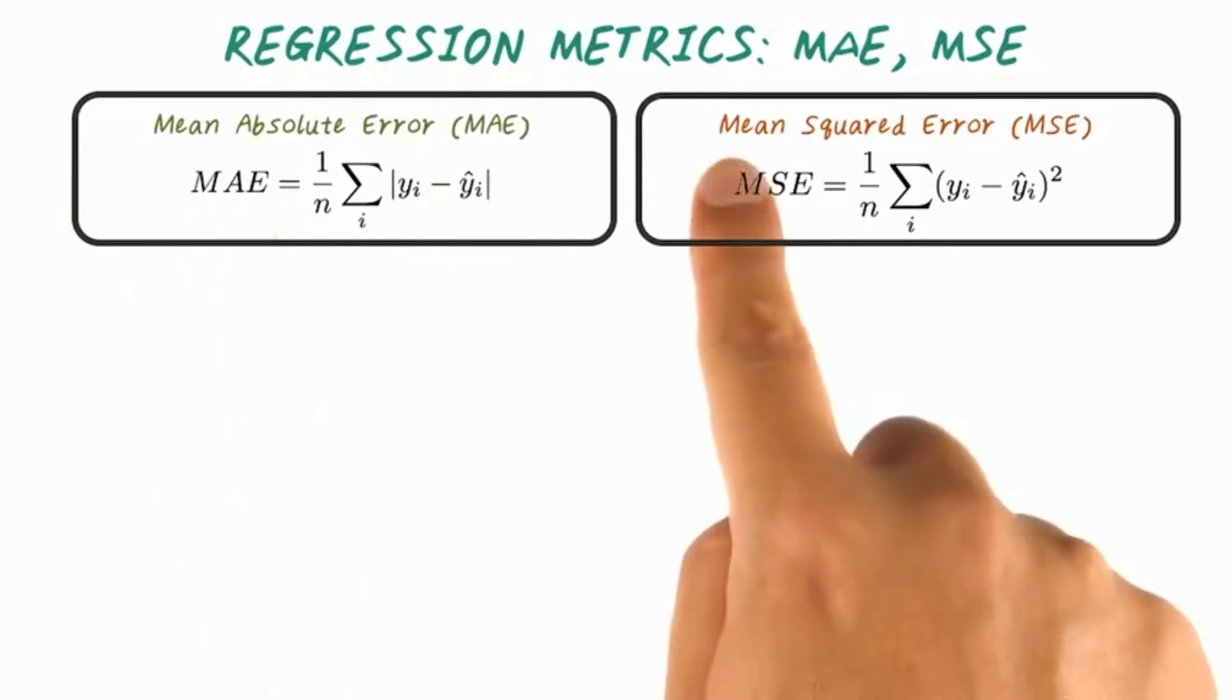The most popular regression metrics are mean absolute error, MAE, or mean squared error, MSE.